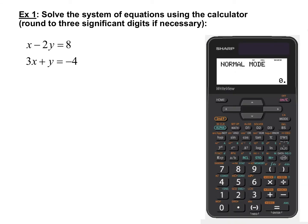Example 1: solve the system of equations using the calculator and round answers to three significant digits if necessary. We have the system X minus 2Y equals 8, and 3X plus Y equals negative 4. This system of two-variable linear equations is already in the form AX plus BY equals C.